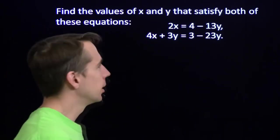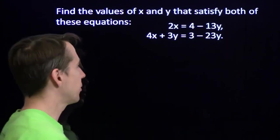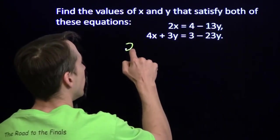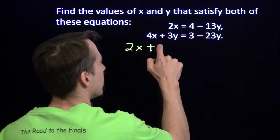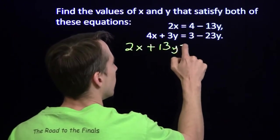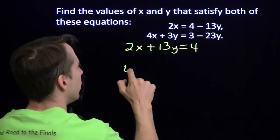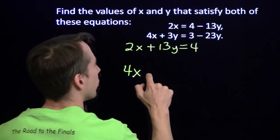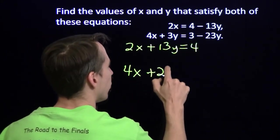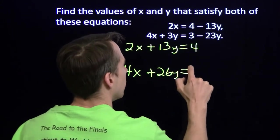Let's try this again. Alright. Get organized first. Add 13y to both sides. We had 2x plus 13y equals 4. Add the 23y to both sides here. 4x plus 26y equals 3.